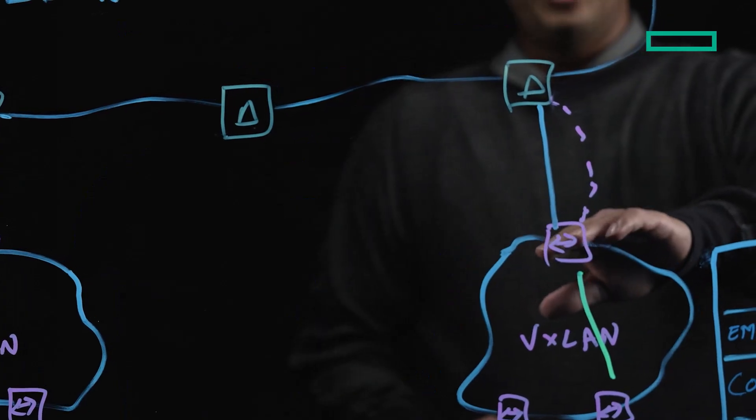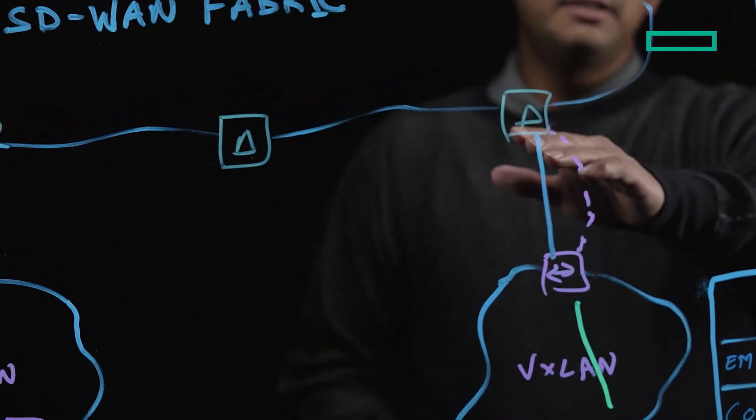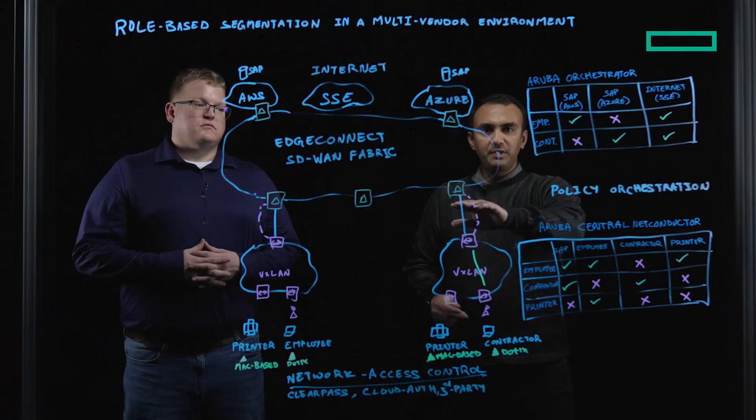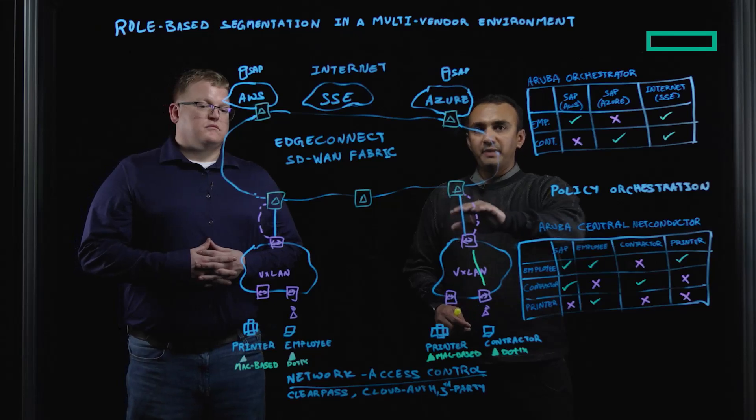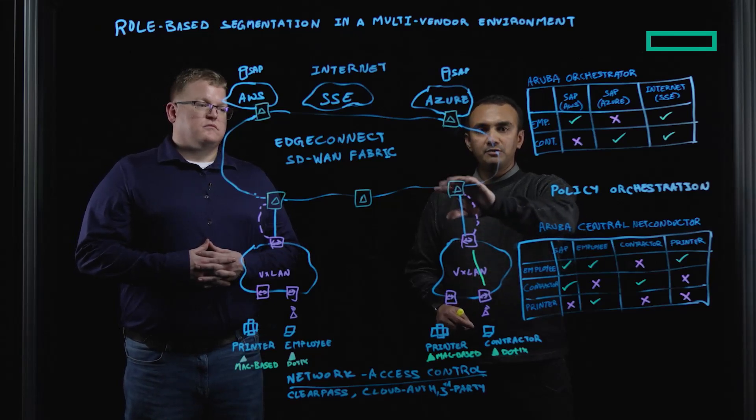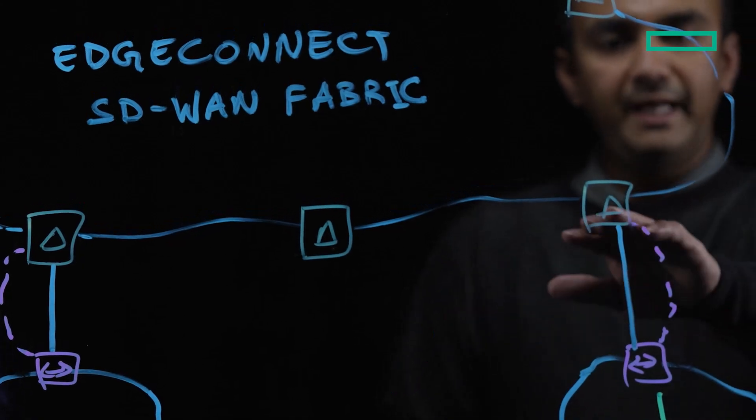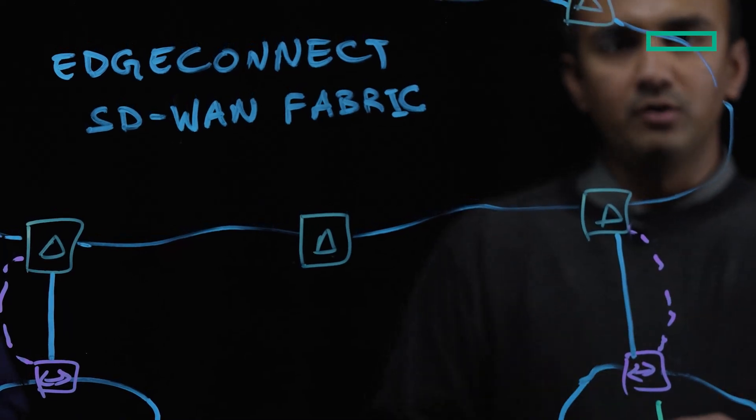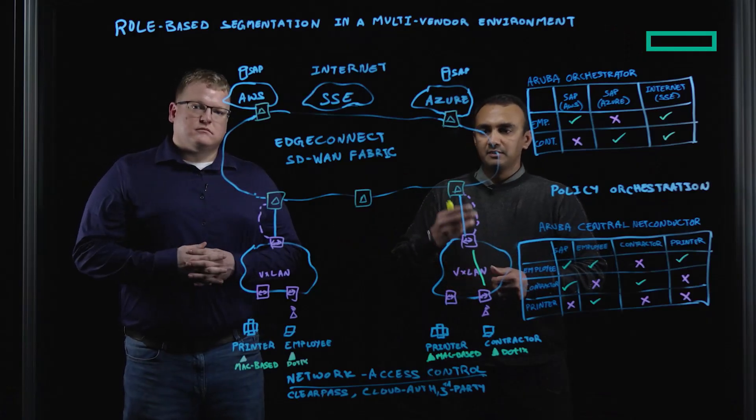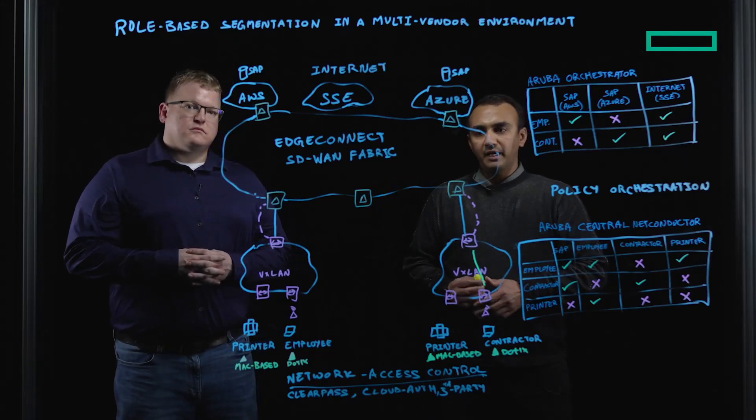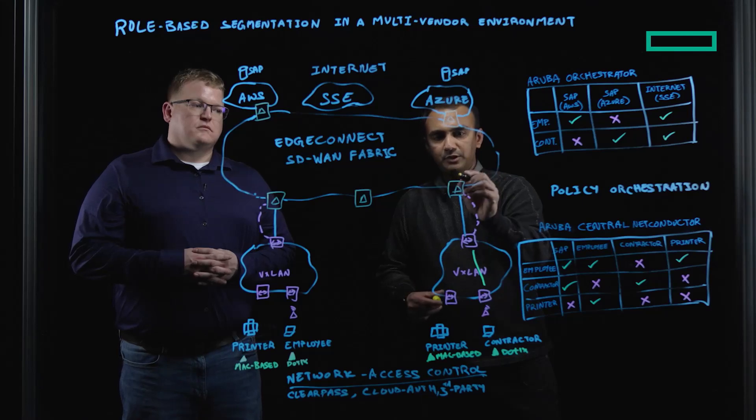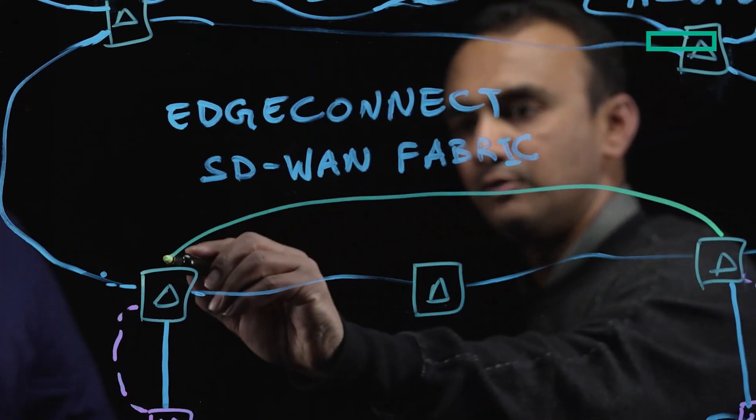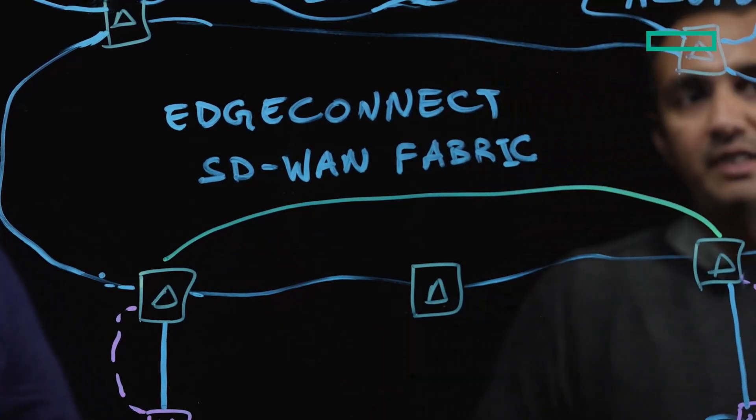The border would then handoff to the EdgeConnect in the standard-based BGP EVPN VXLAN tunnel, where the role is maintained from the fabric to the WAN domain. The EdgeConnect at this point learns the roles, transports the traffic natively in an IPsec header from site one, from location one, EdgeConnect all the way to the remote site EdgeConnect device.